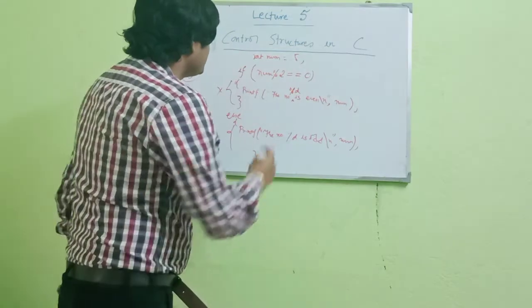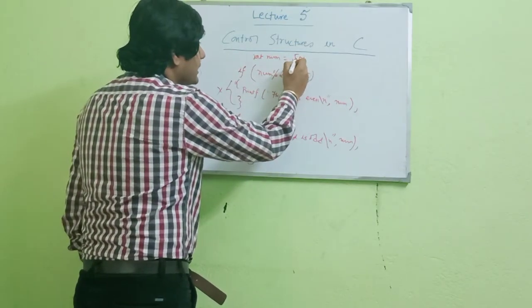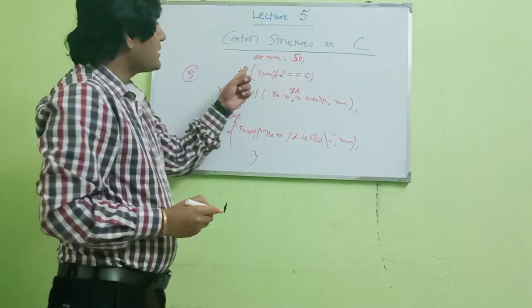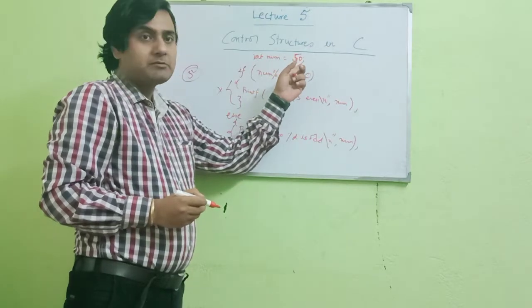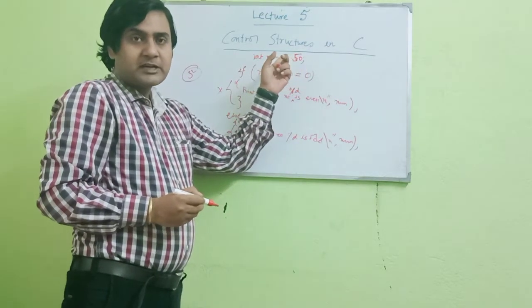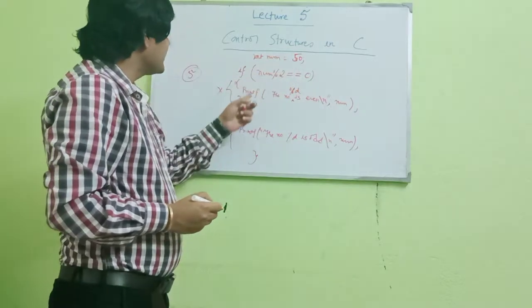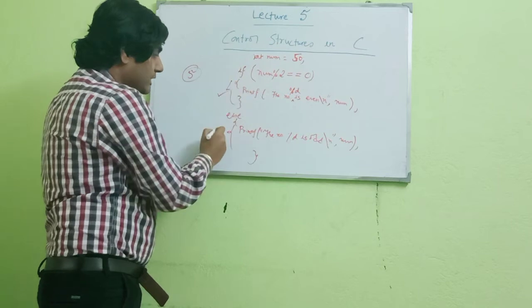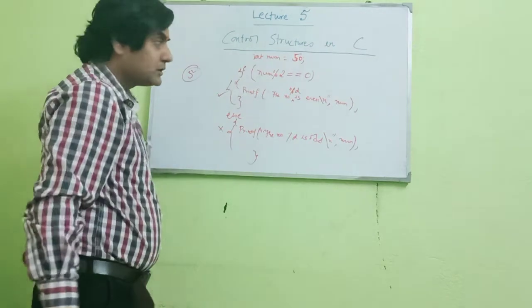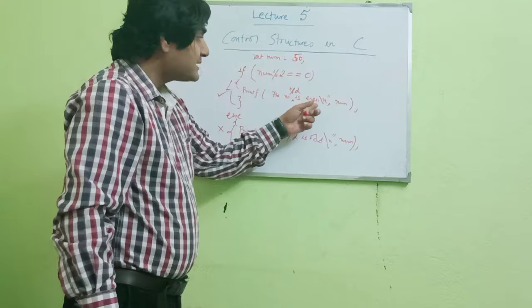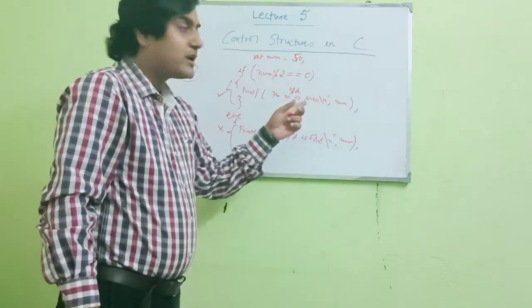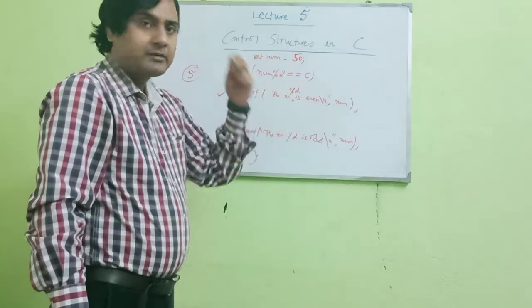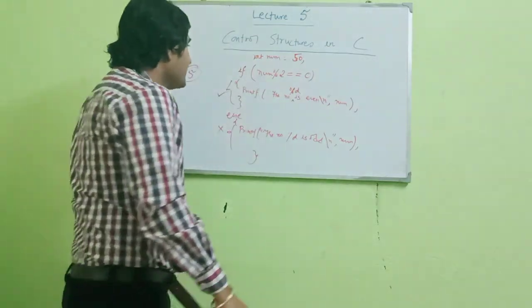Now suppose I make the number 50. If (number % 2 == 0) — when 50 is divided by 2, the remainder is 0, so the if condition will be true and the else condition will be false. The output should be 'the number 50 is even'. That is all about the if-else statement.